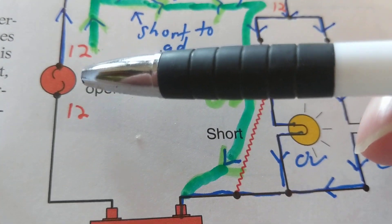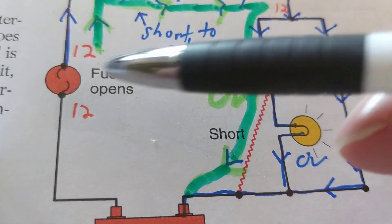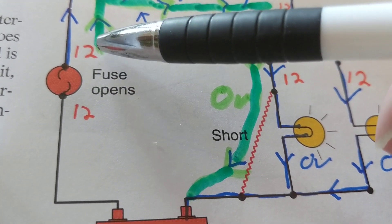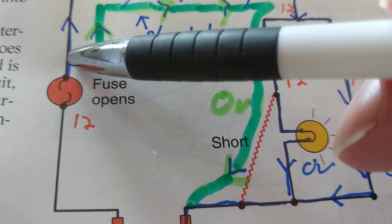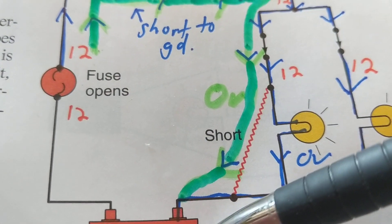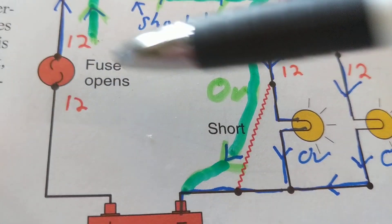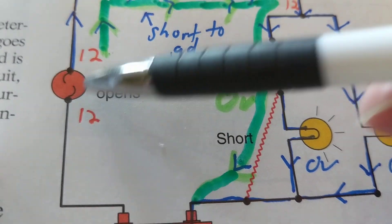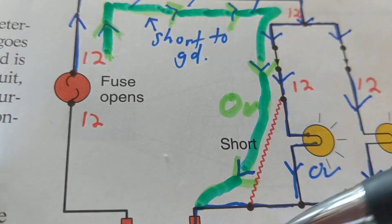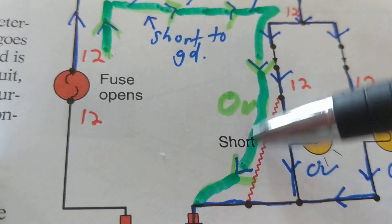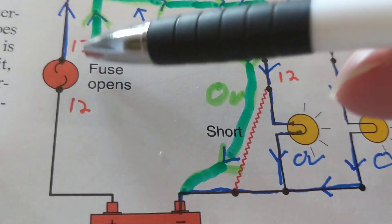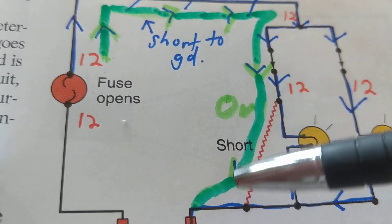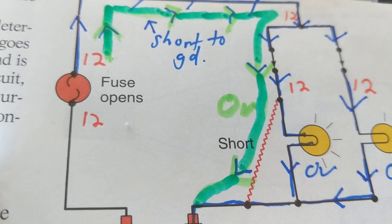When you find a blown fuse, don't just replace it. Measure the resistance from the load side of the fuse to ground. If you still measure zero ohms from that point to ground, there is still a short present. There's no point putting in another fuse if it's going to blow again. Find and eliminate the short to ground first, then replace the fuse.